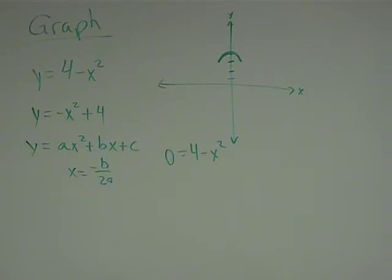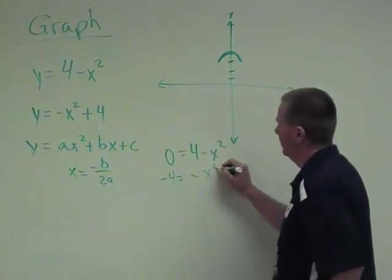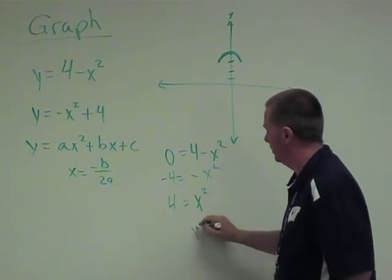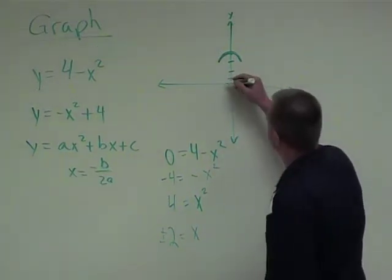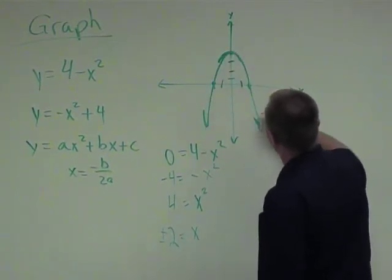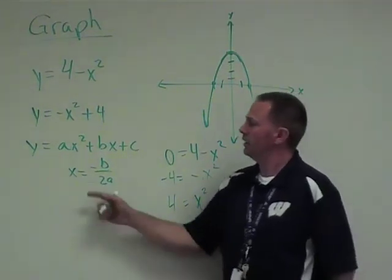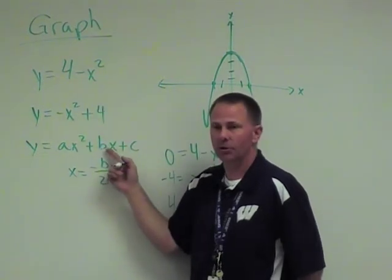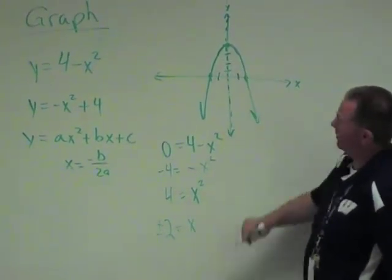Those are your zeros. Positive negative two. Negative two, positive two. So that is your parabola. We didn't even find the axis of symmetry. If we did find the axis of symmetry, there is no B term here. So B is zero. Zero over anything is zero. X equals zero. It's right there. That's the axis of symmetry.